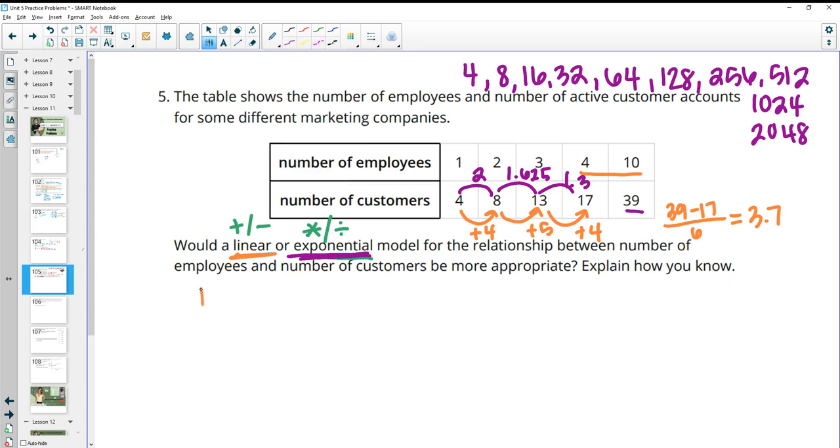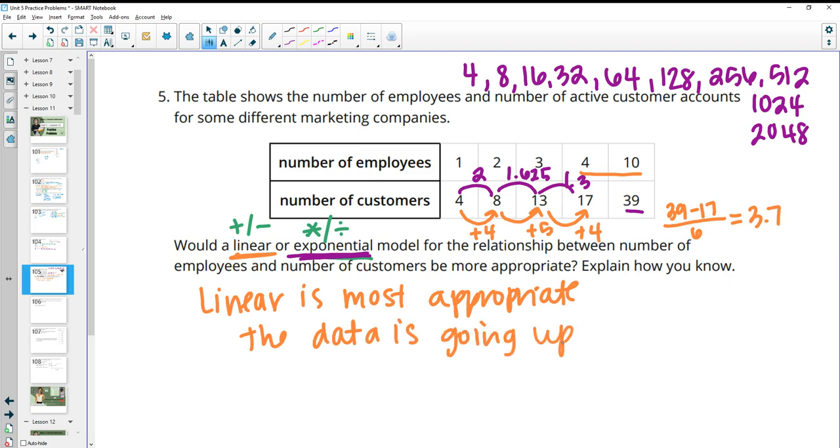So linear is going to be a much better choice. So linear is most appropriate because the data is going up at a pretty consistent rate of about four, right? So adding by about four, four, five, 3.7. So right around four.